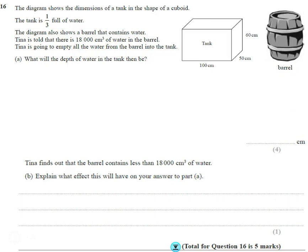All right, okay, so we've got quite a complicated question this one. The diagram shows the dimensions of a tank in the shape of a cuboid. The tank is a third full of water, and we've also got a barrel over here which has 18,000 centimeters cubed of water in.